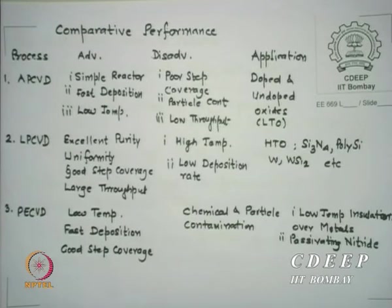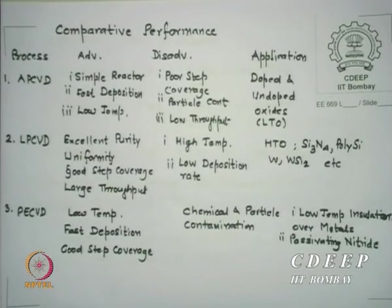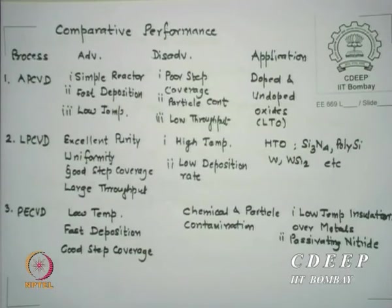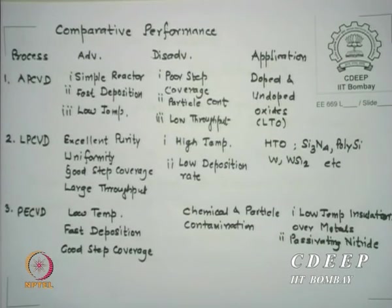For comparison: we have 3 kinds of CVD — APCVD, LPCVD, and PECVD. APCVD requires a simpler reactor, is a very fast depositing system, and can be operated at low temperatures. The disadvantage is poor step coverage, possible particle contamination, and comparatively lower throughput rate. Throughput rate means the number of wafers per unit time which the susceptor can hold.